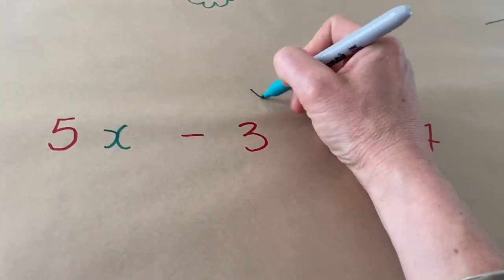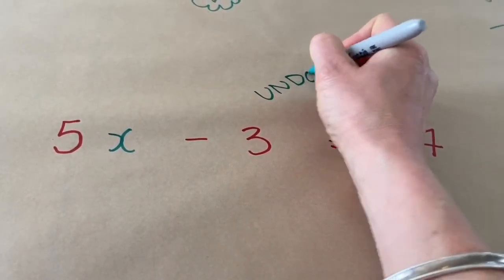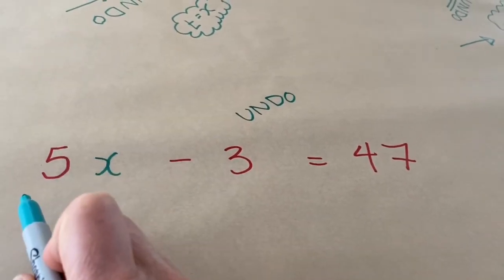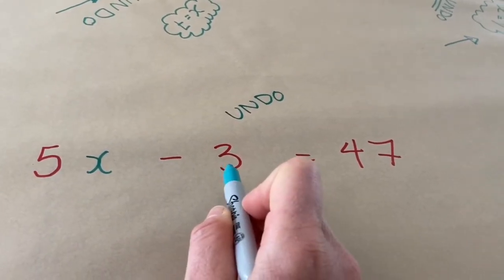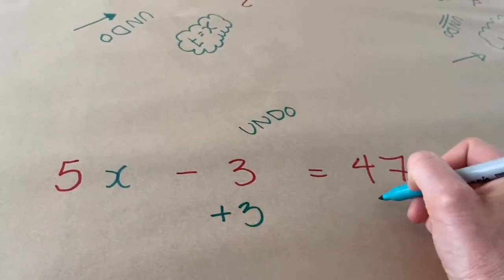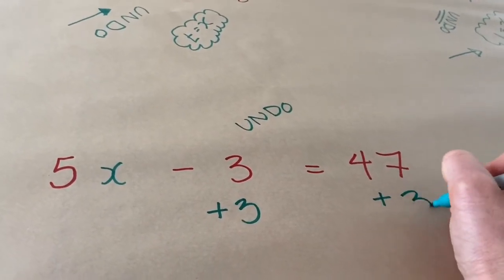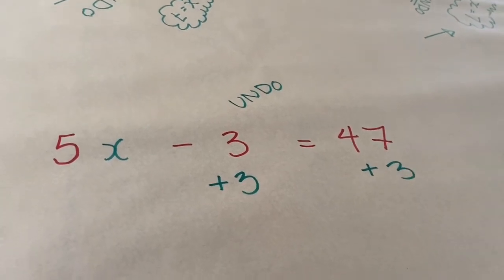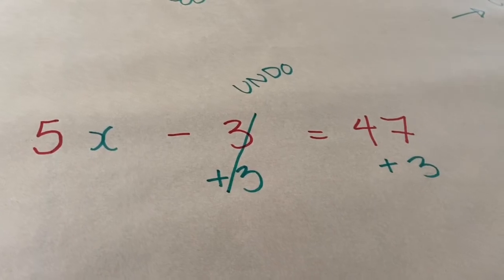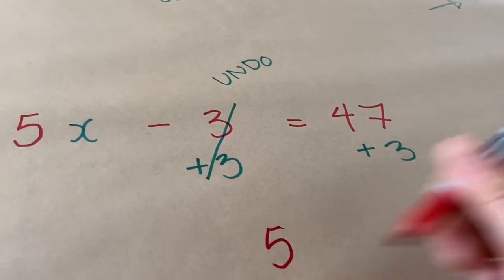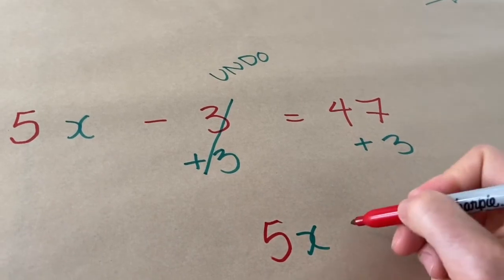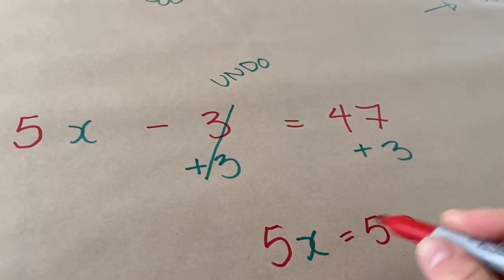I want to undo the things that I did to x. So, I took x, I multiplied it by 5, and then I subtracted 3 to get 47. So, first, I want to undo the subtracting by 3. If I undo subtract 3, I need to add 3, and these would cancel out. And then, I have 5x is equal to 50, which is good.